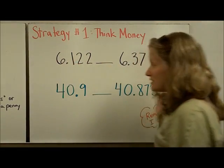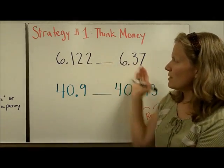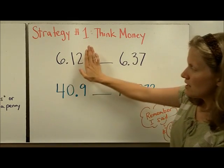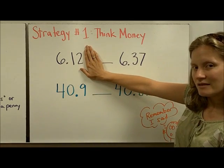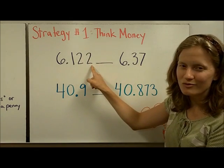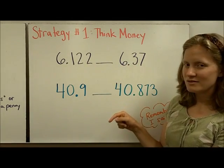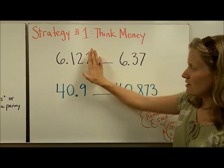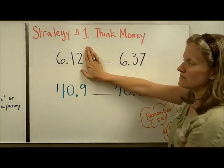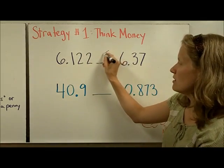Let's use the idea of knowing how much money a decimal is worth to compare some numbers. If I see this amount, it's six dollars and twelve cents — cover up the thousandths place and think about cents — and then a little bit more: two tenths of a penny more, two nonsense. This other number is six dollars and thirty-seven cents. So I ask myself: would I rather have six dollars and thirty-seven cents or six dollars and twelve cents and a little bit more? I'd rather have six dollars and thirty-seven cents — that's the greater amount.